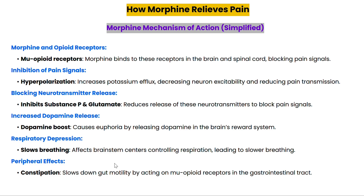At the same time, morphine triggers a release of dopamine in the brain's reward center, creating a feeling of euphoria — but this is also what leads to addiction. One major risk with morphine is respiratory depression; at higher doses it can slow your breathing by affecting the brain stem centers that control respiration. In the gut, morphine slows down movement, which often leads to constipation as a side effect.